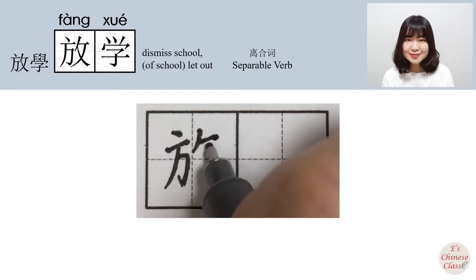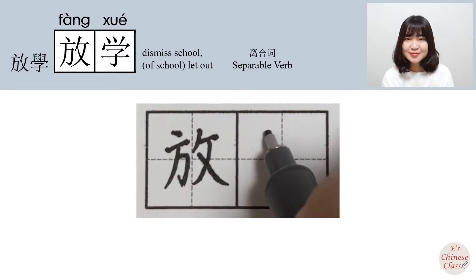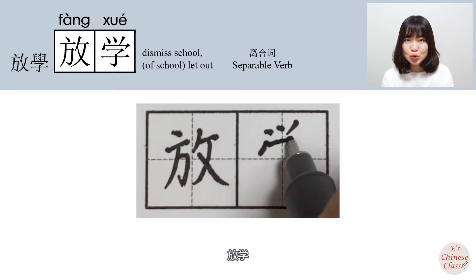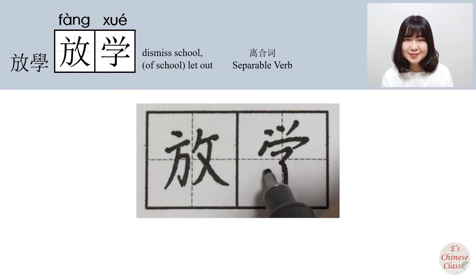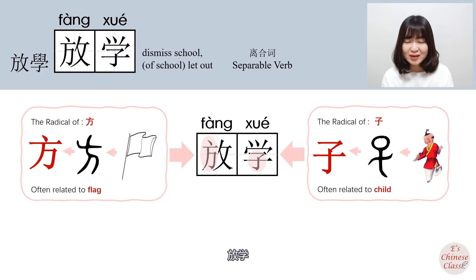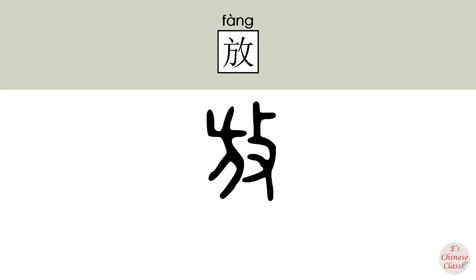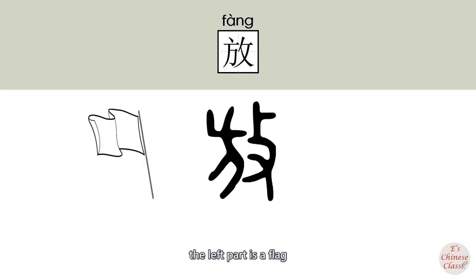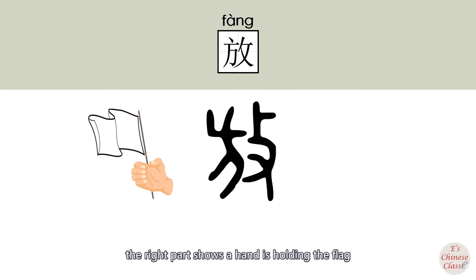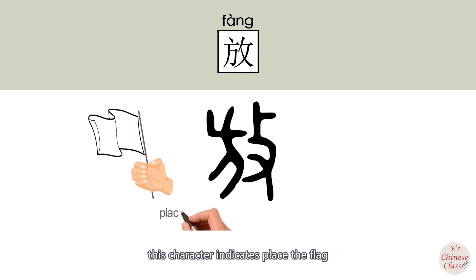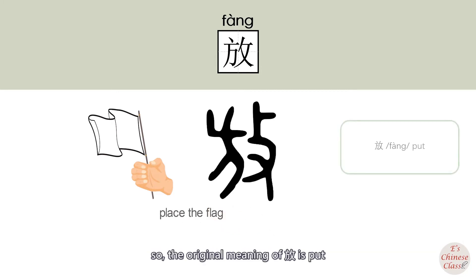放學. In ancient times, 放 was written differently. The left part is a flag, and the right part shows a hand holding the flag. This character indicates placing the flag. So the original meaning of 放 is put.